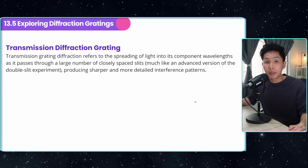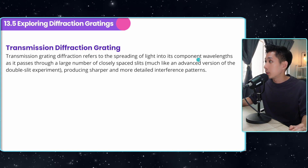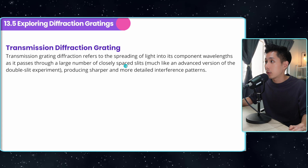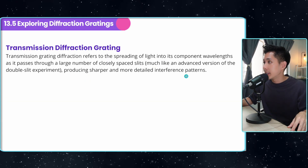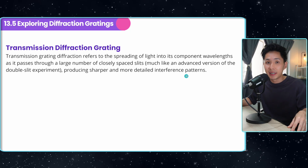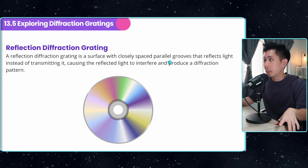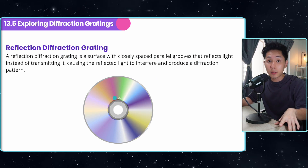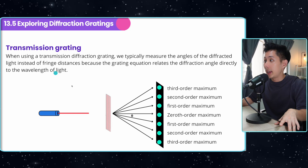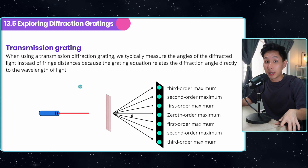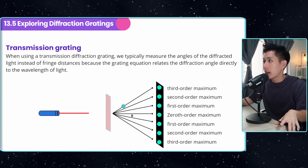The last subtopic is transmission diffraction grating. It is the spreading of light into its component wavelengths as it passes through a large number of closely spaced slits. In the double slit experiment, we only have two slits, but here we have more slits that are more closely spaced. There is also a reflection diffraction grating, which uses closely spaced parallel grooves that reflect light instead of transmitting it, causing the reflected light to interfere and produce a diffraction pattern.